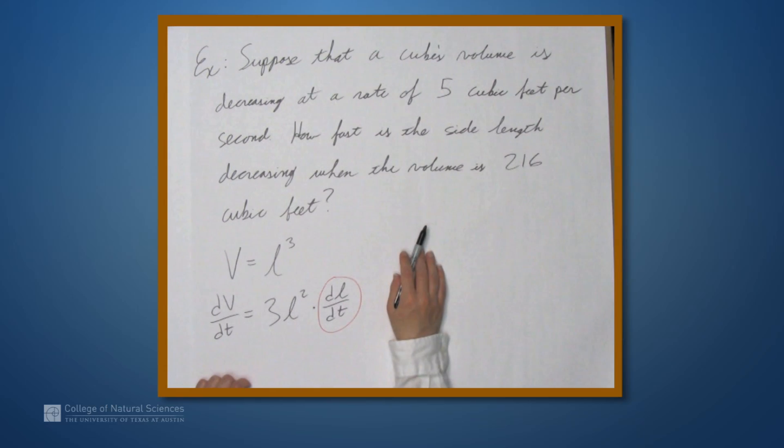What are we given? Well, we're given that the volume is decreasing at a rate of 5 cubic feet per second. So, dV/dt is negative 5.